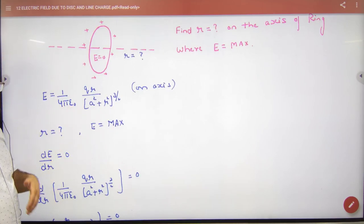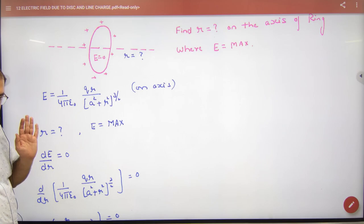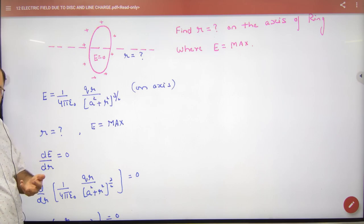If we want to make any thing maximum or minimum, we have done it, what do we want to do? Differentiate and equal to zero. This is the rule of maximum and minimum. What do we want to do? dE by dr.